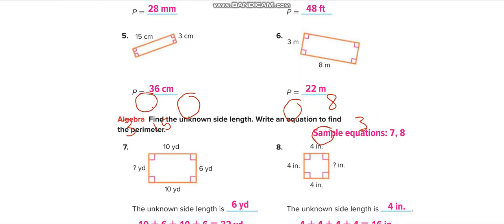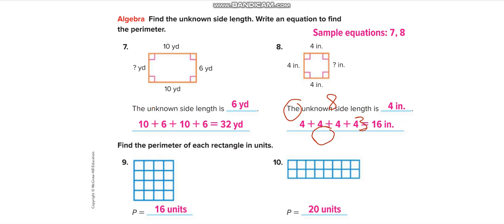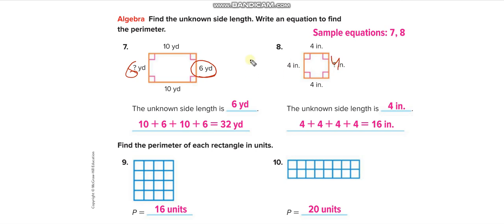Let me clear the screen. Here, if this side is 6, that opposite side is also 6. If this is 4, that is also 4 — add all of them to find the perimeter. For the next shape, count all the boundaries: one, two, three, four, five, six, seven, eight — eight on each side. Add all of them. Remember, perimeter means boundaries only — not the area inside.